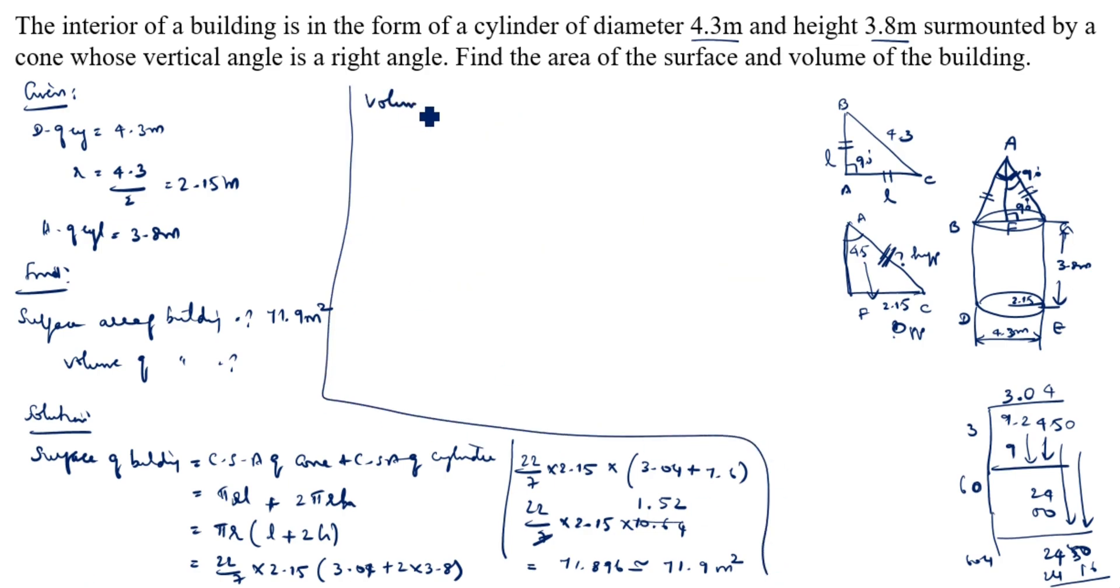Now we will calculate volume of building. Volume of building formula: volume of cone plus volume of cylinder. Volume of cone is 1 by 3 pi r square big H plus pi r square h. Pi r square is common, take it outside. 1 by 3 big H plus small h. Big H, which one is h value? This value is the h. We do not know this value. How we will find this value?